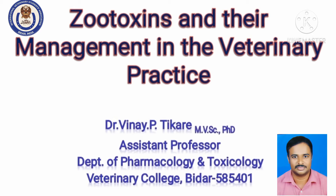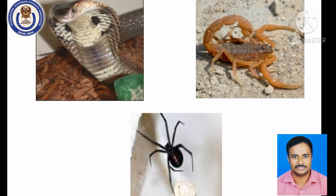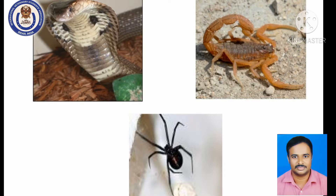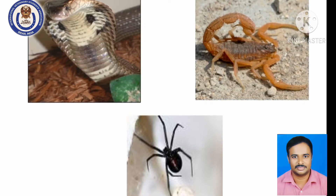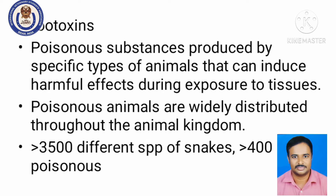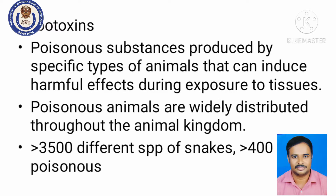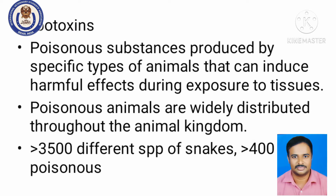When we talk of zootoxins, the main things that come to mind are snake poisoning, scorpion poisoning, spider poisoning, and bites by toads. The definition of zootoxins: these are poisonous substances produced by specific types of animals that can induce harmful effects during exposure to tissues — either through bite or sting, causing toxicity. These poisonous animals are widely distributed throughout the animal kingdom.